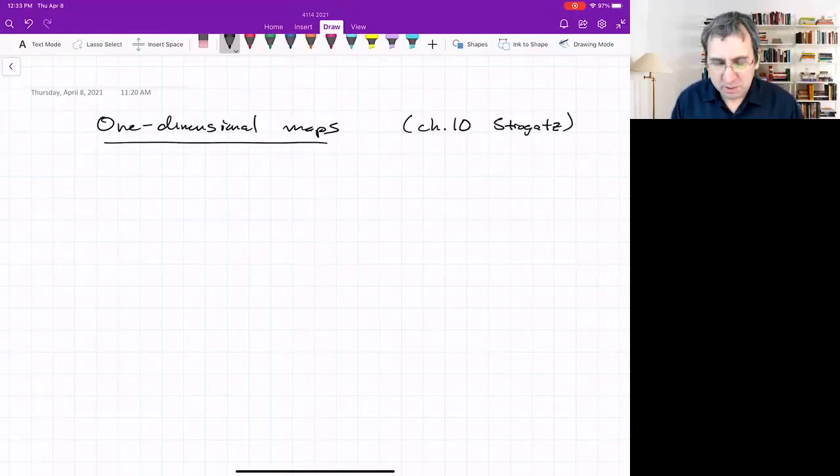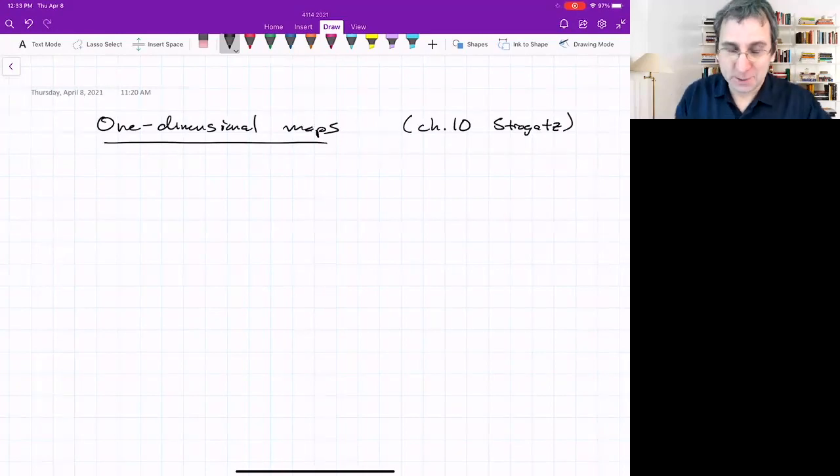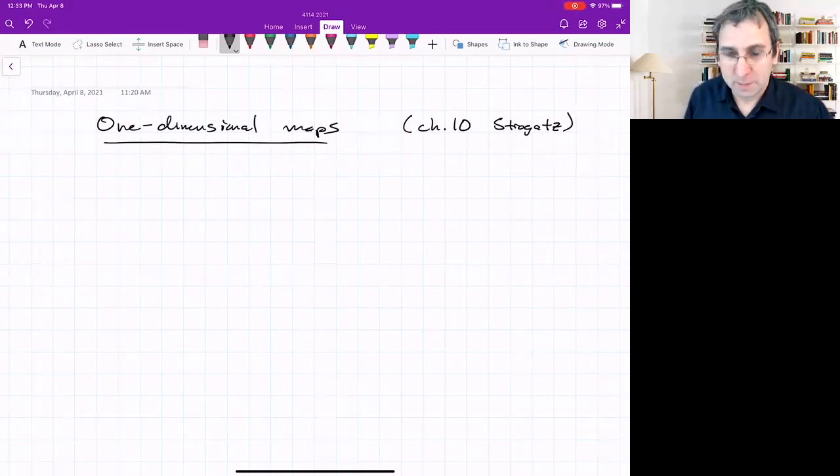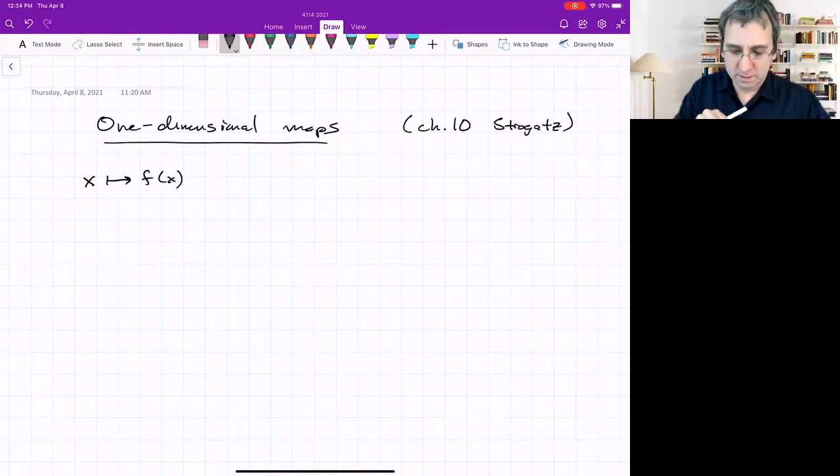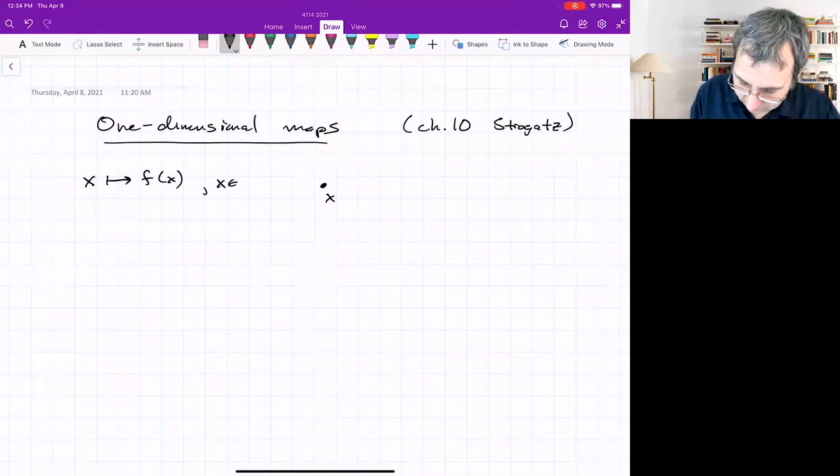So 1D maps are a category of maps. Maps are different from differential equations. So we're going to leave differential equations for a while. There is a relationship though. So maps are generally, if we think of, it takes a point, and I'm thinking in, for right now, Rn,